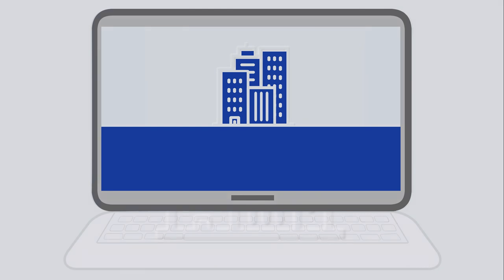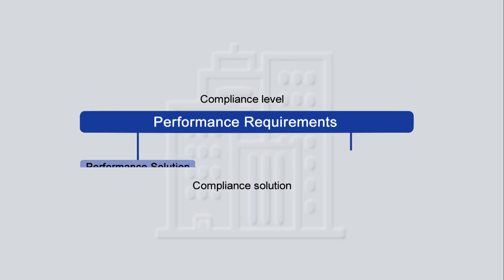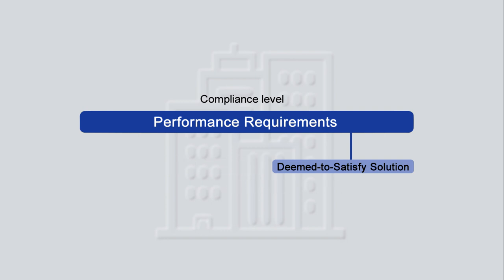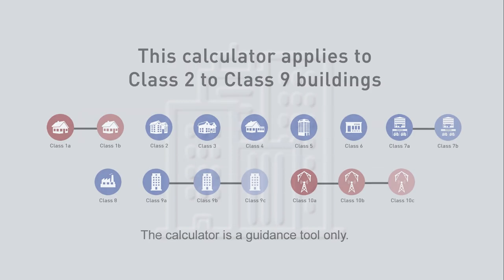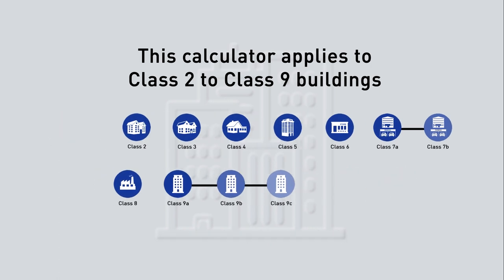The NCC is a performance-based code requiring all new buildings to meet minimum performance requirements. A deemed-to-satisfy approach is the optional pathway for achieving compliance used by this calculator, which applies to Class 2 to Class 9 buildings.